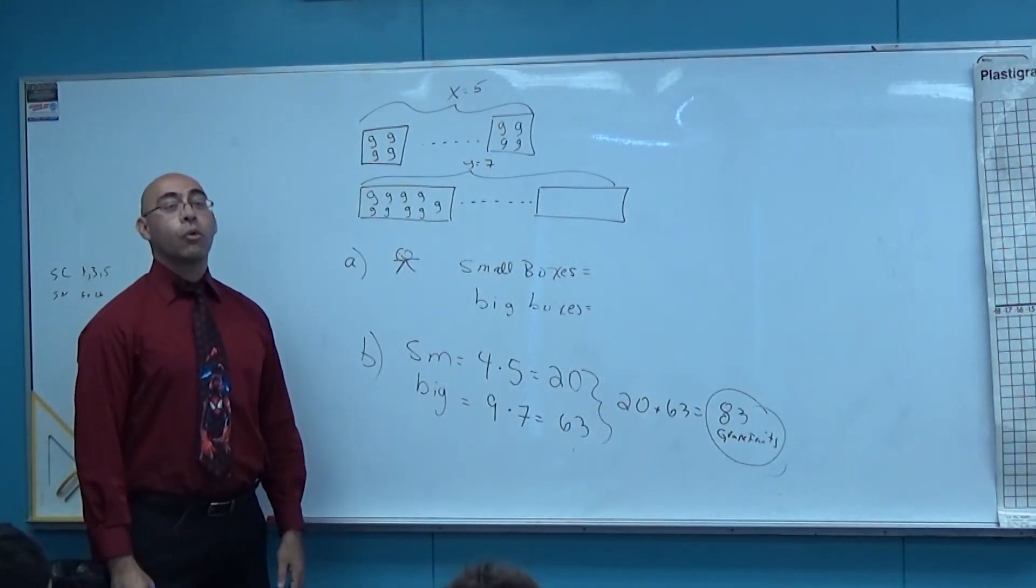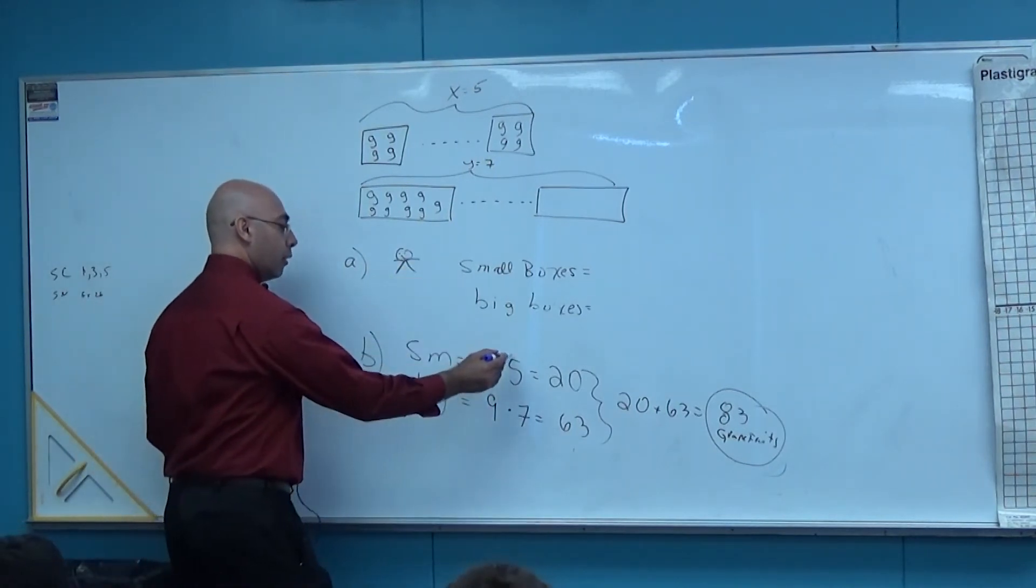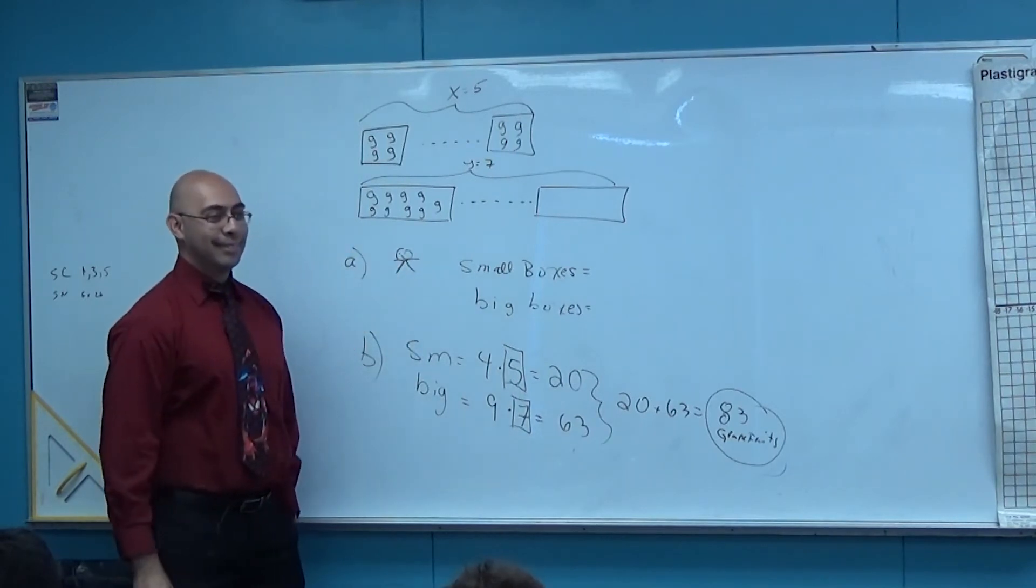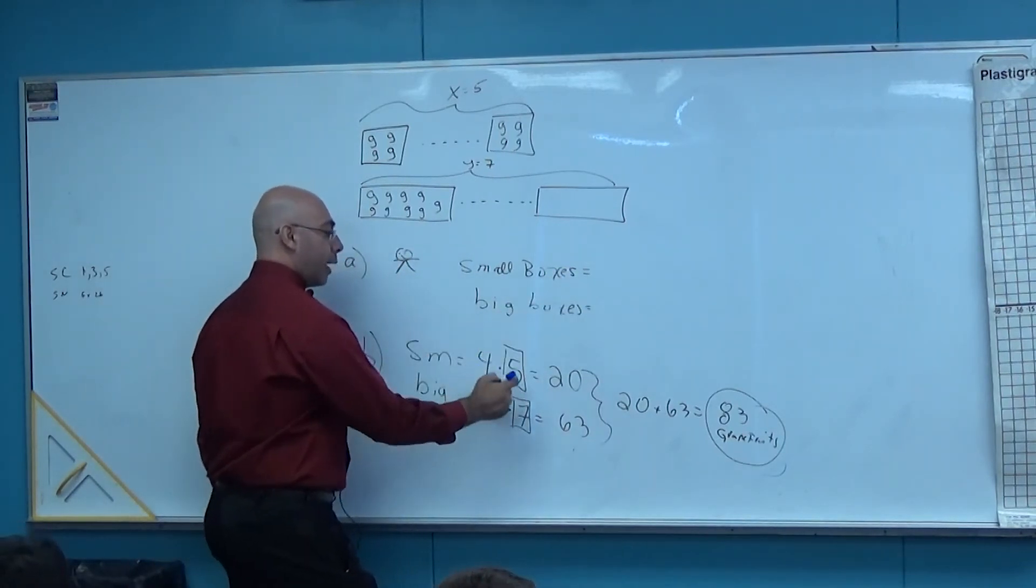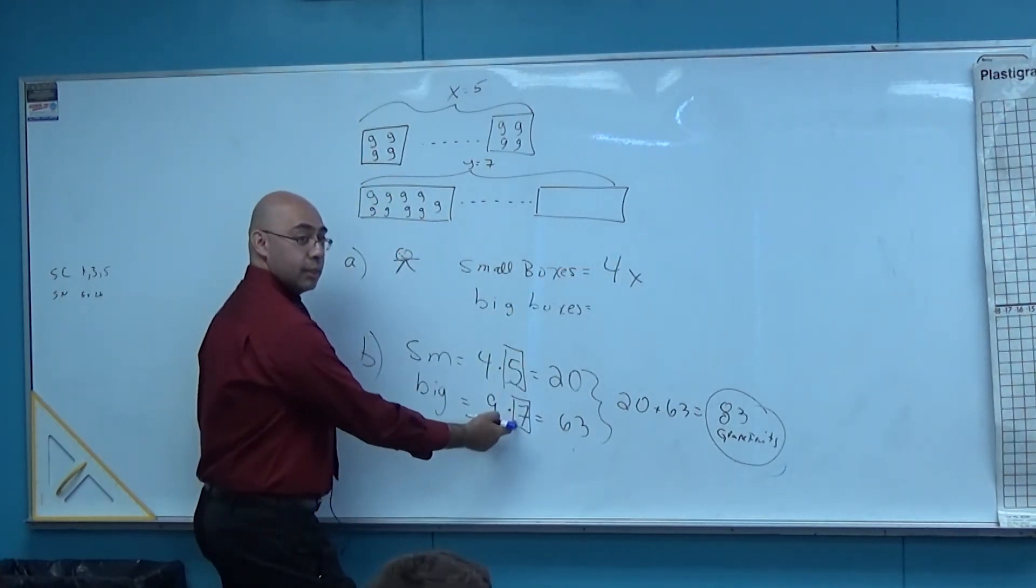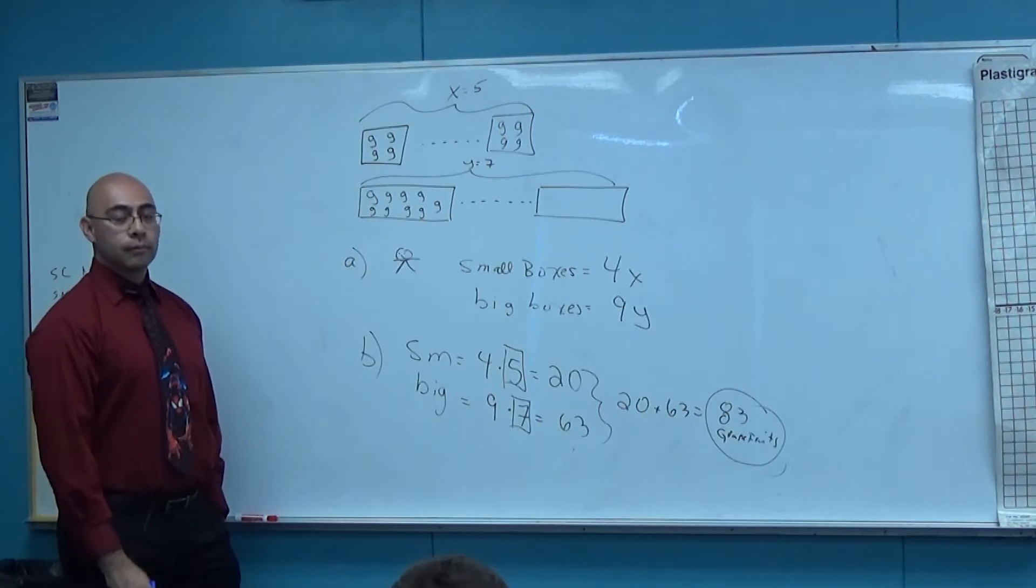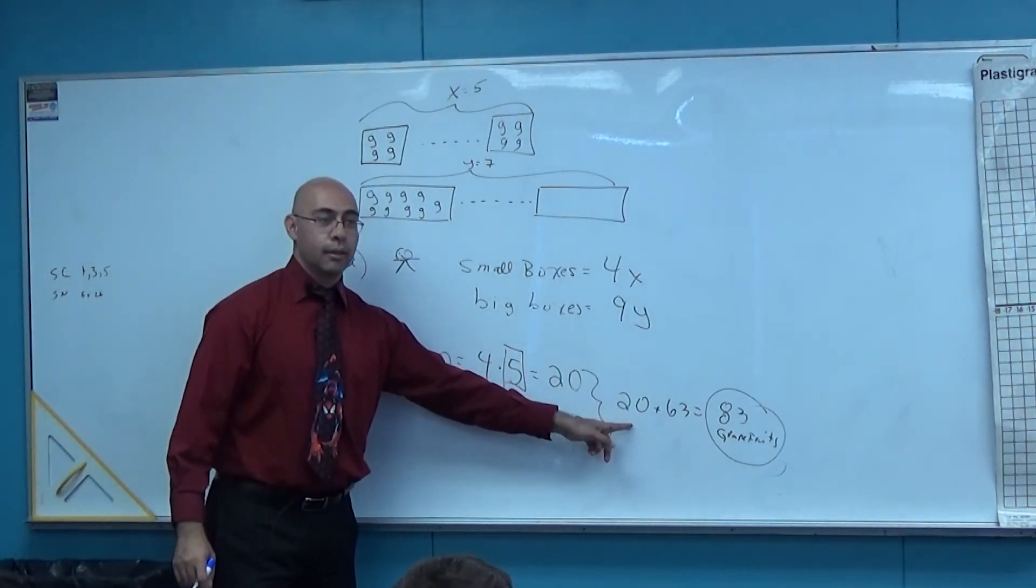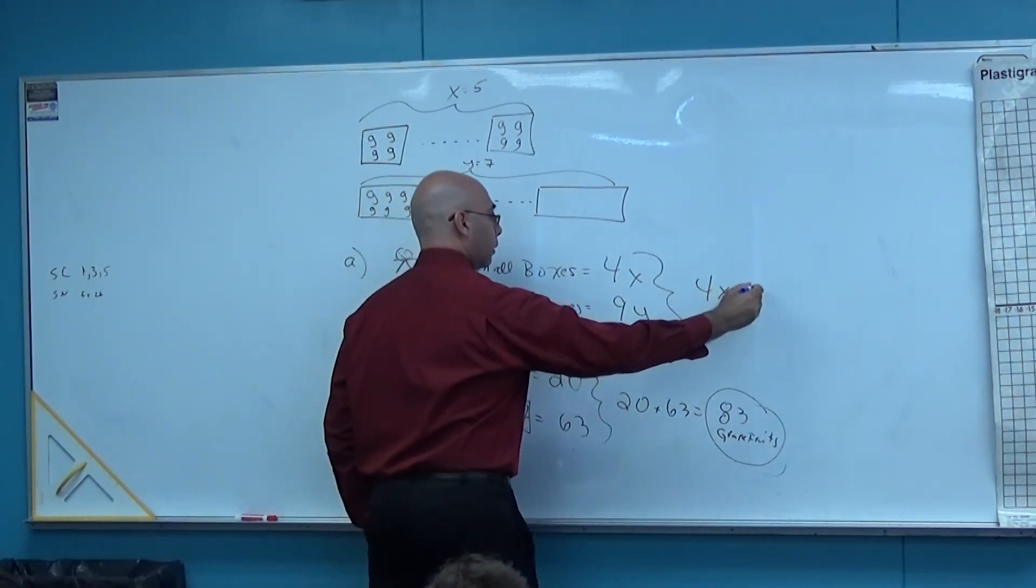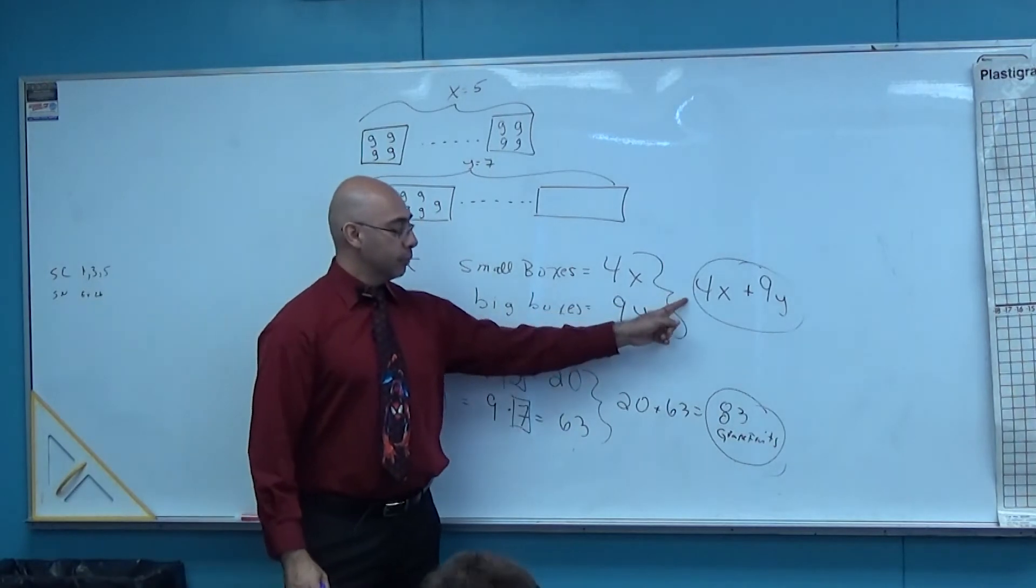So now this is what we do. To write it as an equation, I just work backwards. Instead of writing the number five and the number seven, what should I replace it with? Yes sir. So instead of writing four times five up here, I write four times X. Instead of writing nine times seven up here, I write nine Y. And what did I do with these two numbers at the very end? I added them, so I just add them together. This is your answer for letter A. That's your answer for letter B.